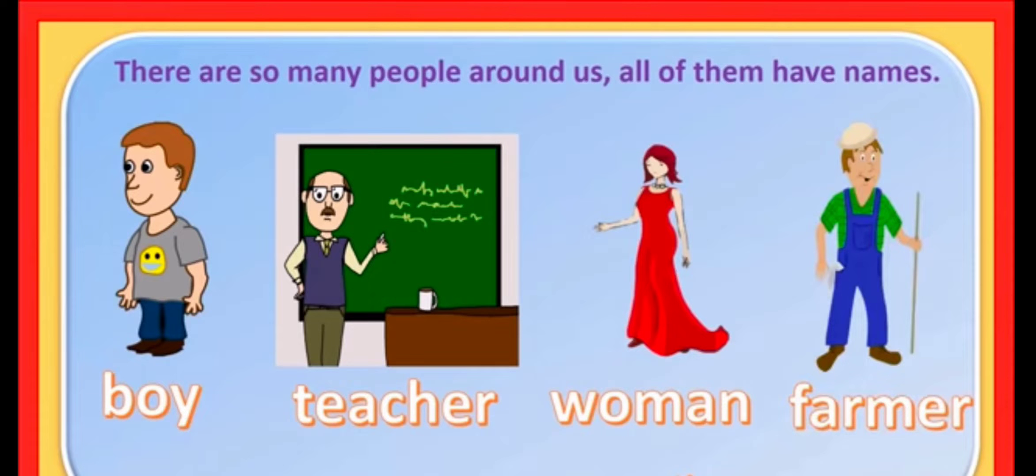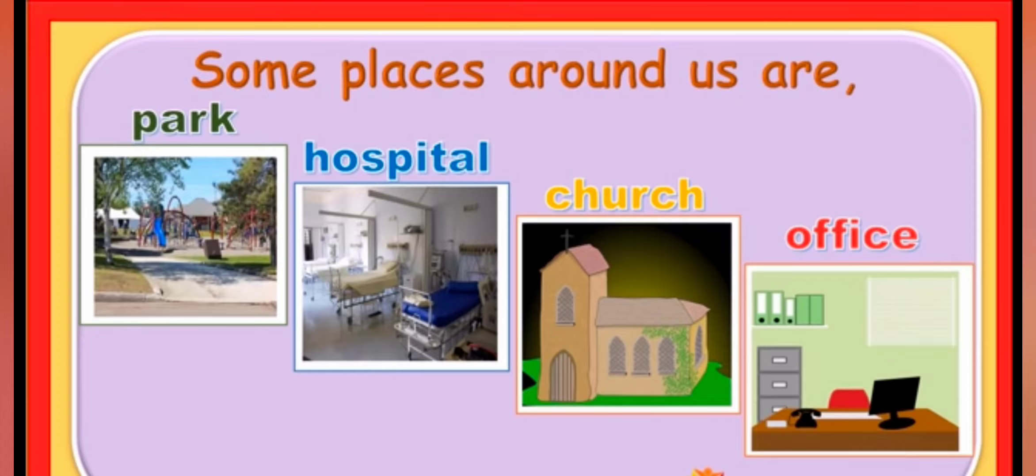Students, same way, we go to different places. And now, let us see which all places do we go. And do they have a name? Yes, they also have a name. So, let us look at the first picture. It is a picture of a park. And the next picture is of a hospital. Next, we have church and office.